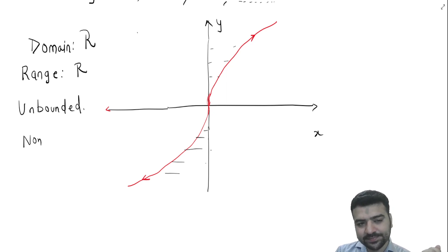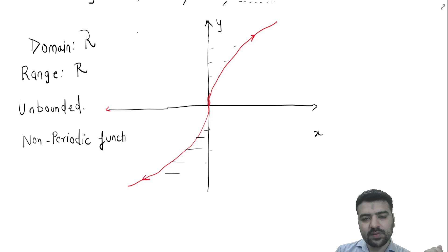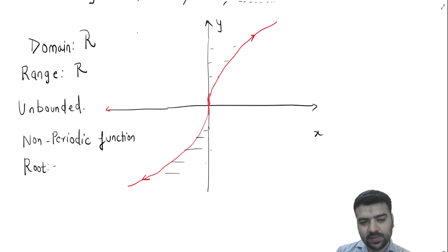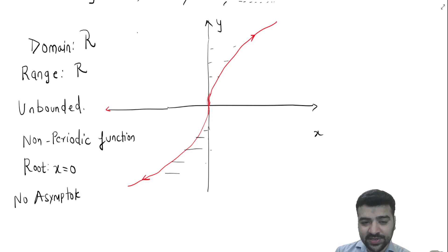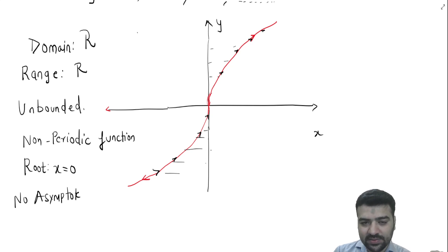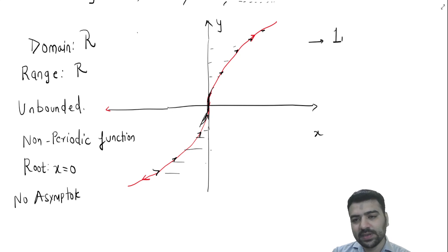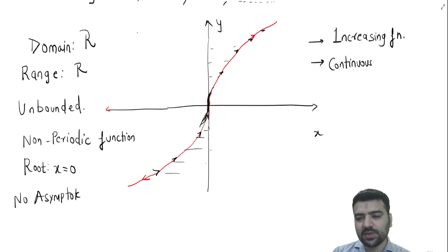It is a non-periodic function. The root is at x equal to 0. There are no asymptotes. It is an increasing function — you can see that when x is increasing, y is also increasing. This is a smooth, continuous curve with no break in the graph, so it is a continuous function.